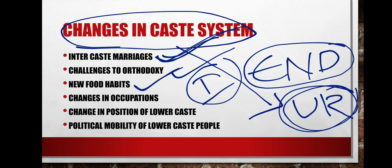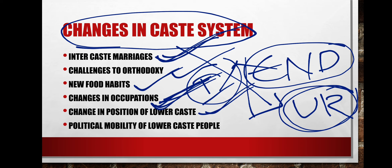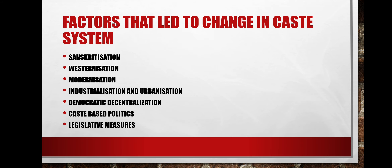Changes in food habits and occupation are also visible — people of the same caste are performing different occupations now. There is a change in the position of lower-caste people because of government activities, constitutional provisions, better education, and government policies. There is also political mobility of lower-caste people — because of democratic policies, lower-caste people are now able to participate and show their role in political activities.